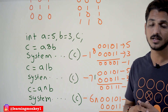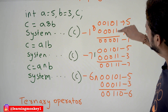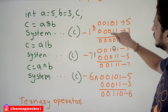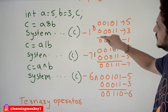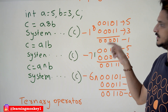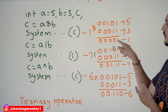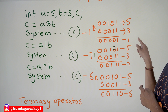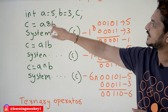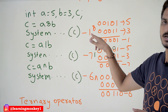Applying bitwise AND: 1 AND 1 = 1, 0 AND 1 = 0, 1 AND 0 = 0, and all remaining bits are 0. So the result is 0,0,0,0,0,0,0,1, which is equivalent to decimal 1. That is why A & B is going to display output 1. A AND B is placed in C, and if you display C, it is going to be 1.